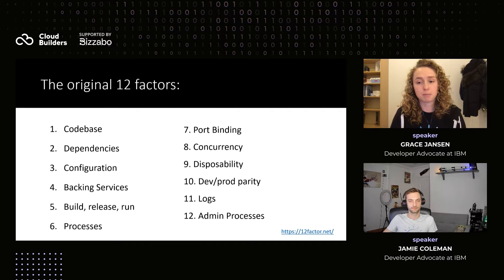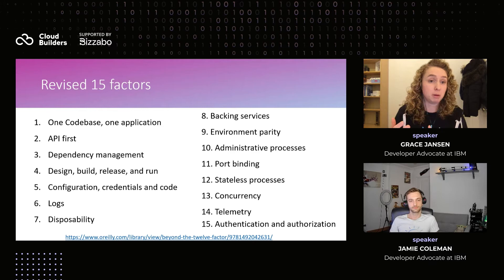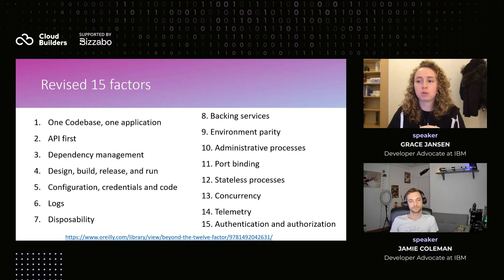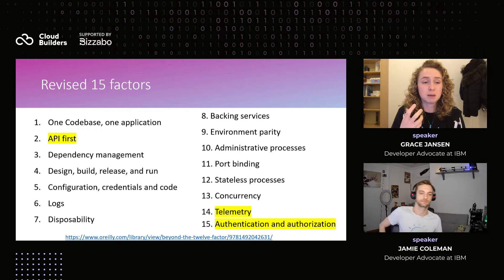The 12 factor application then became the 15 factor app methodology. In this methodology, some of those original factors are either the same or very similar. For example, we have 'one code base, one application' — in the original 12 factors that was just called 'codebase.' We've really brought out that key part: you have to have a one-to-one relationship between your application and your codebase, and a one-to-many relationship between your codebase and your deployments.